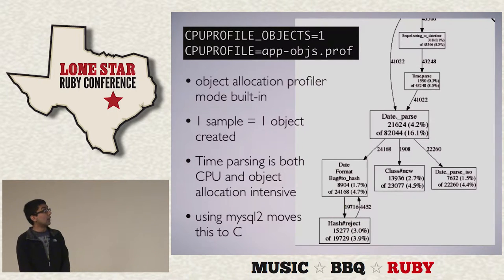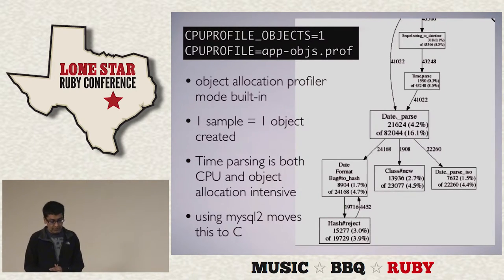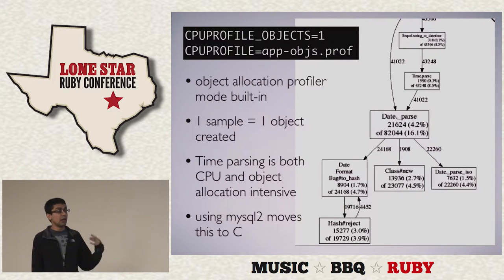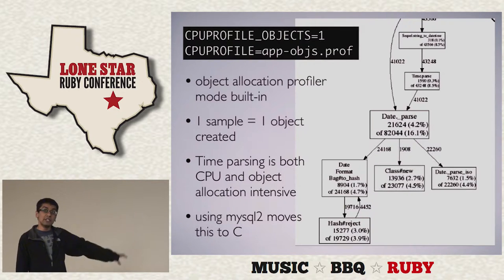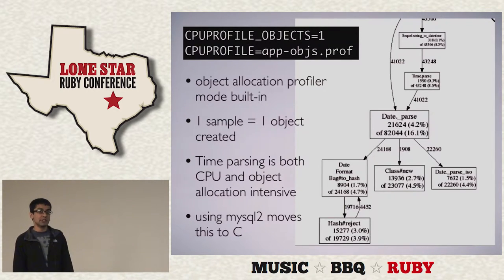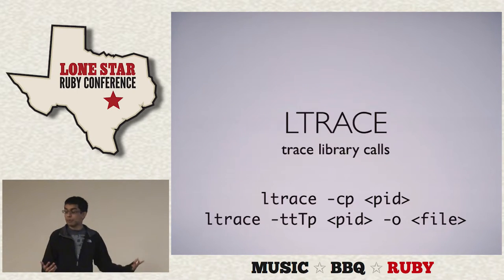I recently added an object allocation mode to perftool.rb where each sample corresponds to one object created. In Ruby it's really easy to create objects, and objects are expensive — the more you create, the more work GC has to do, and the more peak memory usage you hit. Running this on a Rails application, you can see date parsing and time parsing is not only CPU intensive but also creates a lot of objects because of string manipulation. We switched to MySQL2 recently and all of this went away because it moved into C — 16% of Ruby objects were being created in date parsing alone.